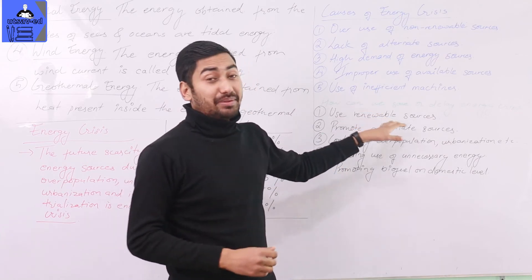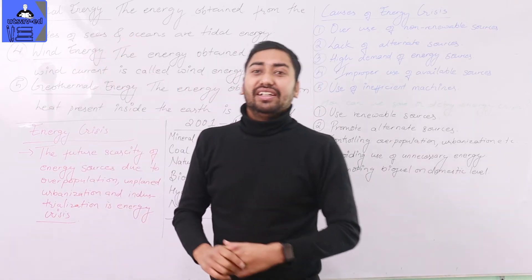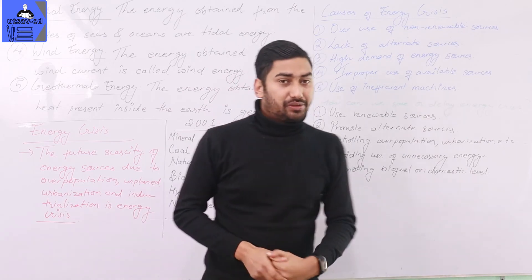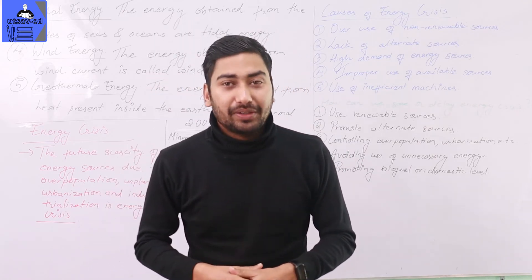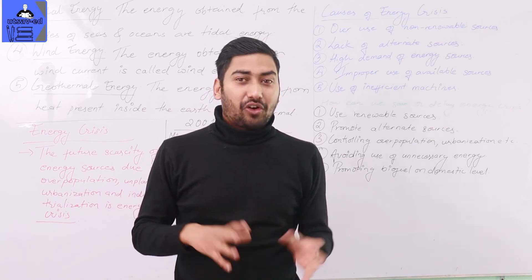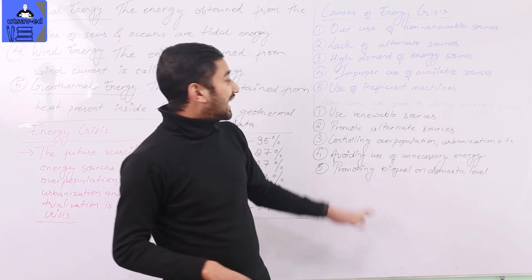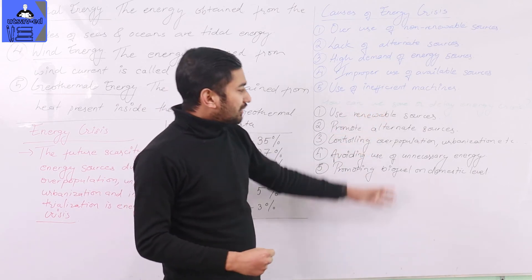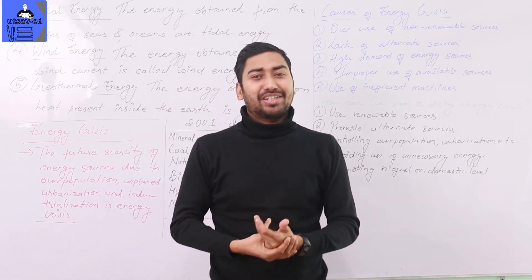We should also avoid the unnecessary use of energy. For example, turning off lights when not needed. We should promote biofuel on the domestic level. Biofuel is an important alternative source of energy, and we can promote biofuel and biogas at the domestic level. These are the steps that we can take to reduce the impact of the energy crisis upon us. In the case of Nepal, we can use biofuel as well.